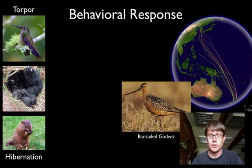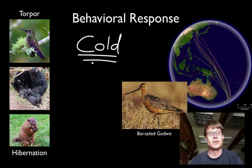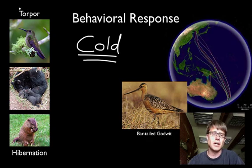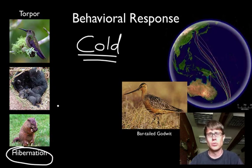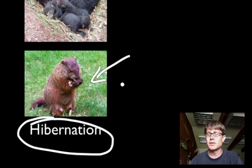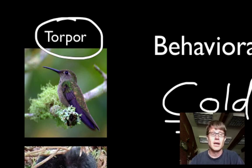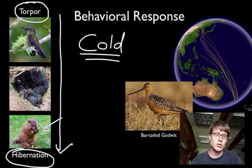Let's talk about behavioral responses. Let's say it gets cold during the winter — what can you do? You can either stay or you can go. If you stay, you can enter into something called hibernation, where you lower your body temperature and your metabolism. A true hibernator, like a groundhog — which is a type of marmot — will crank their metabolism down so it's almost the same as their environment, right around freezing. Torpor is a type of hibernation done on a daily scale, lowering the metabolism at night. There's a continuum from torpor to hibernation.